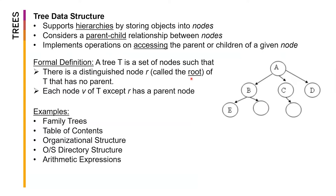We always have a node which doesn't have a parent, and that is what we call the root. Each node V of the tree T, except R which is the root, has a parent node. So you only have one node which doesn't have a parent — the rest should have a parent. That's the formal definition of a tree.